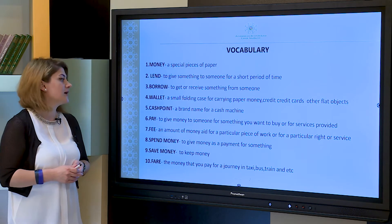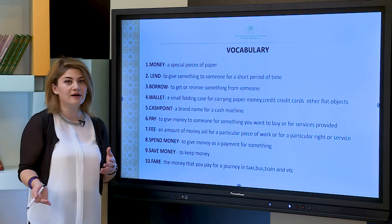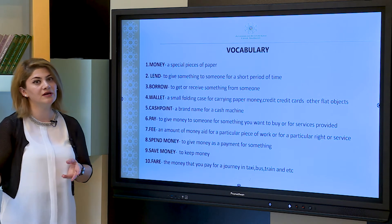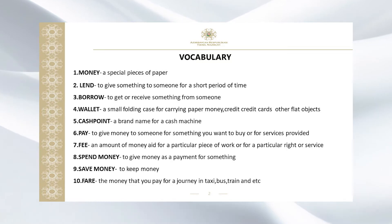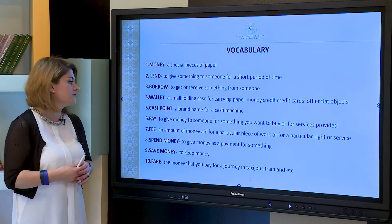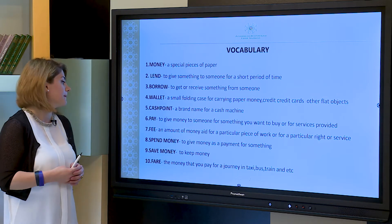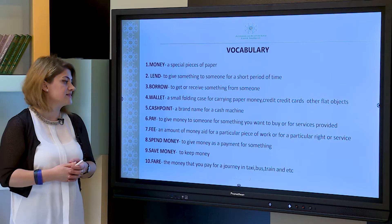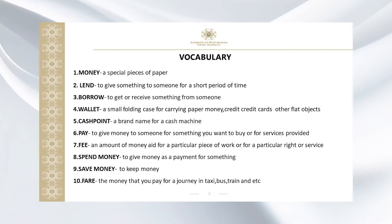Fifth word: cashpoint — a brand name for a cash machine. You can see this cash machine near the market where you live, or near your street, and maybe next to the bank. Pay — to give money to someone for something you want to buy or for services provided. When you go somewhere and buy something, you should pay for it with money. Fee — an amount of money paid for a particular piece of work or for a particular right or service. Spend money — to give money as a payment for something. When you pay money for something, it means that you spend money.